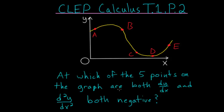At which of the five points on the graph are both the derivative of y with respect to x and the second derivative of y with respect to x both negative?